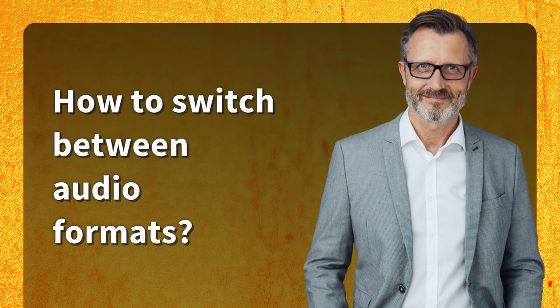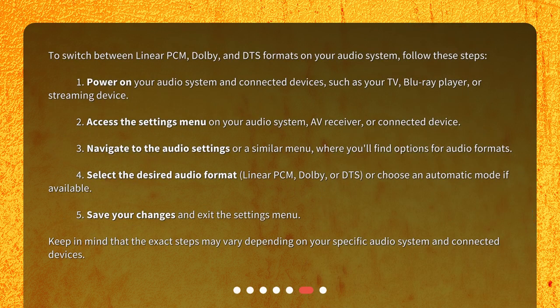How to switch between audio formats? To switch between Linear PCM, Dolby, and DTS formats on your audio system, follow these steps. Step 1: Power on your audio system and connected devices, such as your TV, Blu-ray player, or streaming device. Step 2: Access the settings menu on your audio system, AV receiver, or connected device. Step 3: Navigate to the audio settings or a similar menu, where you'll find options for audio formats.